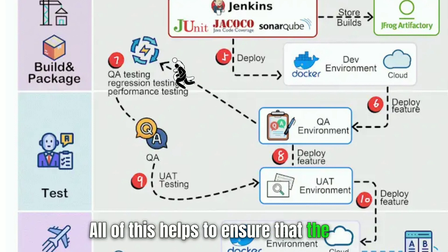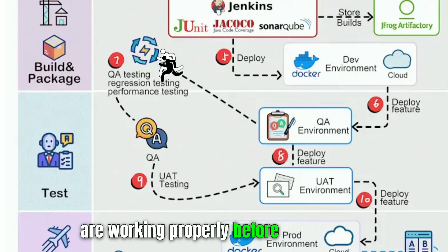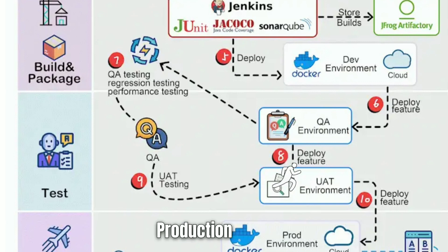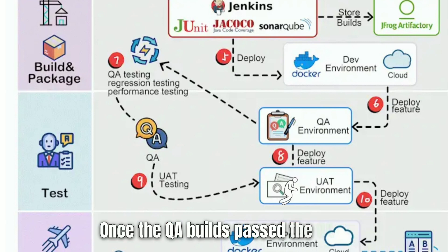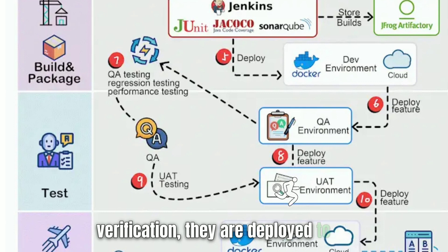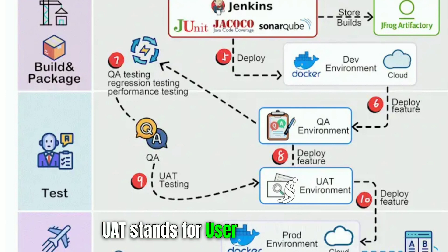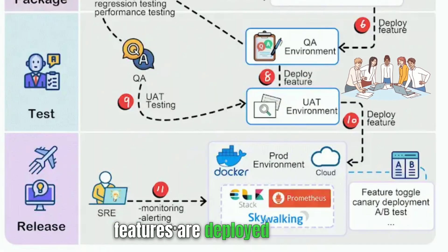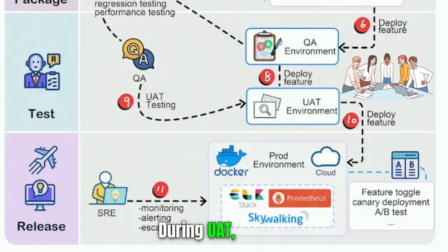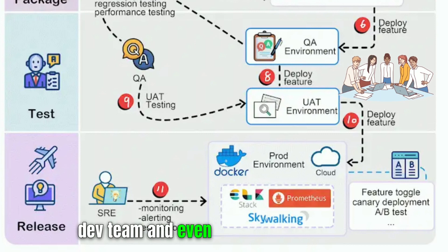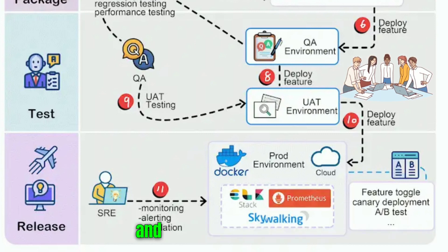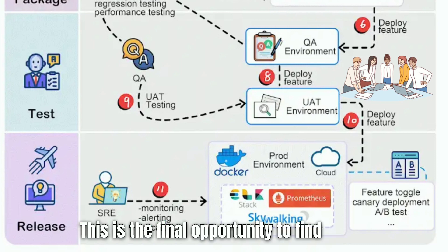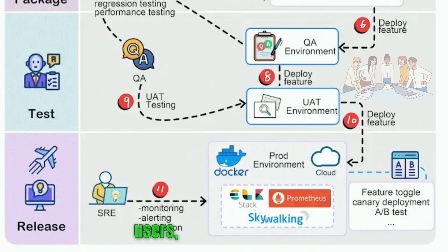All of this helps ensure that the features are working properly before they're deployed to production. In step eight, once the QA builds pass the QA team's verification, they are deployed to the UAT environment. UAT stands for user acceptance testing, and it's the last stage of testing before features are deployed to production. During UAT, the QA team, dev team, and even the product owner test the features to make sure they meet the requirements and expectations of the users. This is the final opportunity to find any issues before they're released.